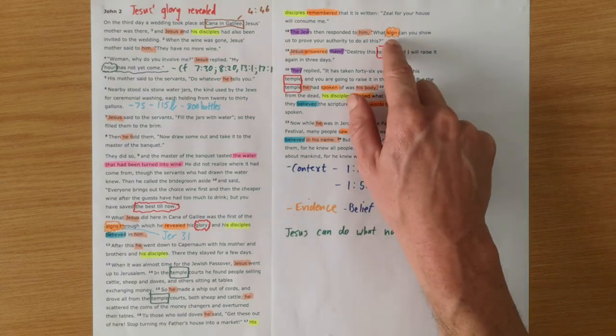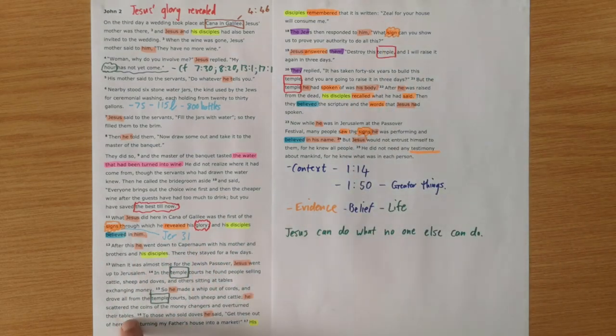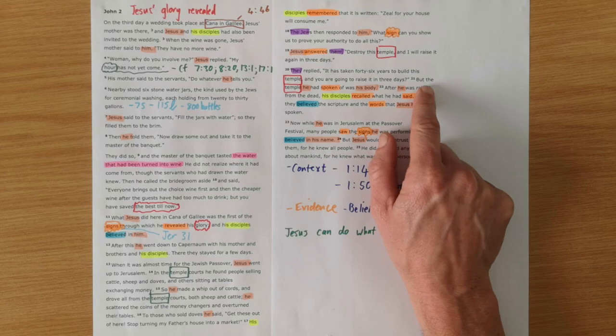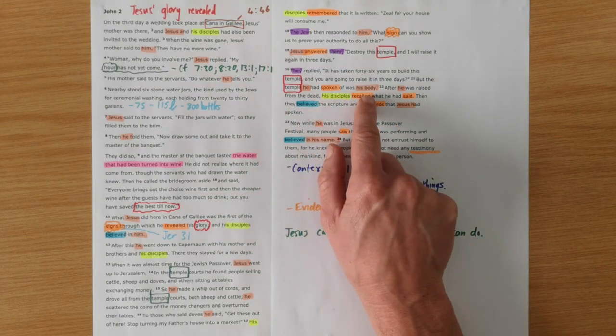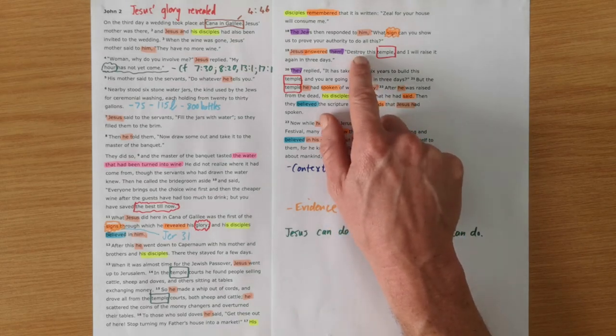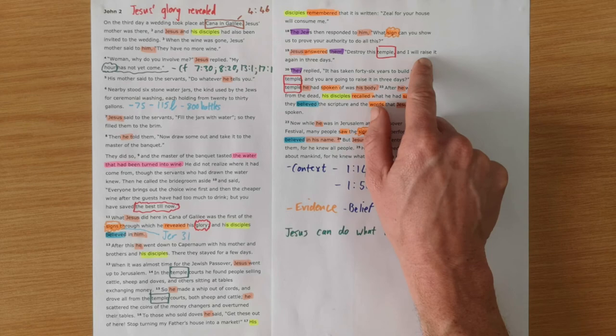And they ask for a sign. Jesus has just given them a sign. He's given them a sign, driving out the people, treating the temple as a market. But they want something else. So Jesus says, well, destroy this place and I'll raise it again in three days. Now that would have boggled their brains. How on earth can Jesus do that? But John explains it in verse 21, as John helpfully does a lot of times in his Gospel. But the temple he had spoken of was his body. Jesus is speaking here about his body being destroyed on the cross and then being raised in three days again.